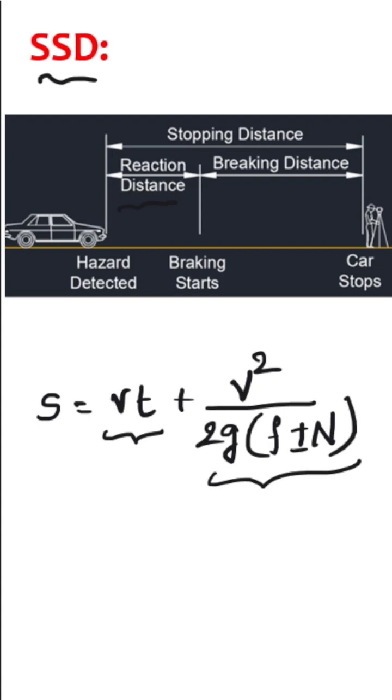V is the speed of the vehicle. T is the reaction time of the driver. F is the longitudinal friction. N is the upward or downward gradient as per given in the question.